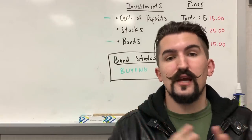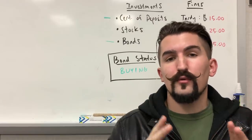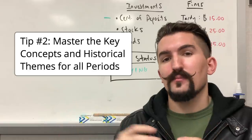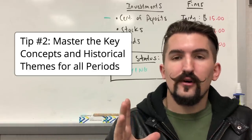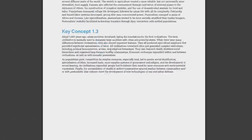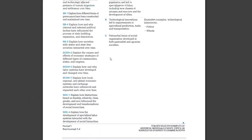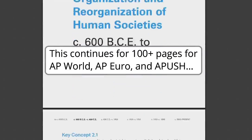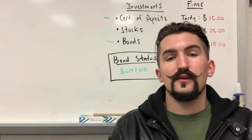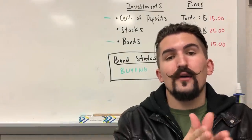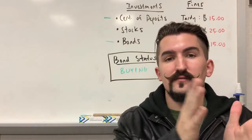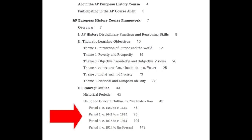Now for the DBQ, and especially the other types of questions, it is critically important to know the key concepts, especially when you're trying to write about outside pieces of evidence. The key concepts are a large list of themes and topics across time provided by the College Board, and you need specific pieces of evidence to prove or go with each of those key concepts. Additionally, you have to know how those key concepts and specific pieces of evidence compare across the various periods of time they draw out in the historical themes.